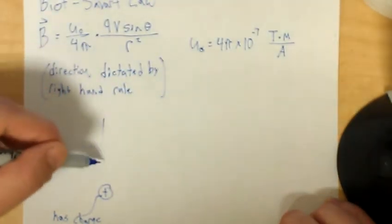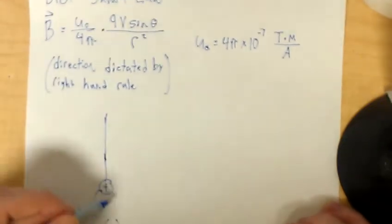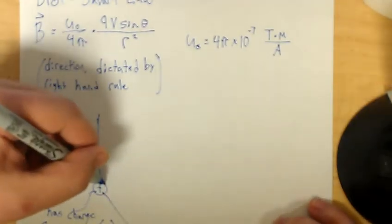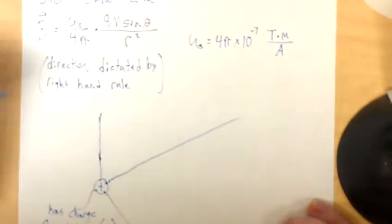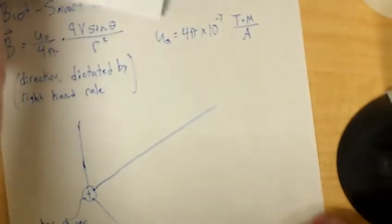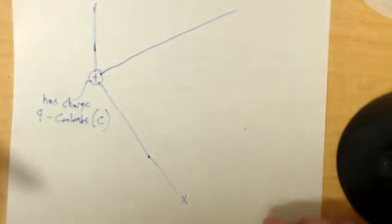Okay, let's put some axes on this charge. Call this the X. So, this is X and Y and Z.